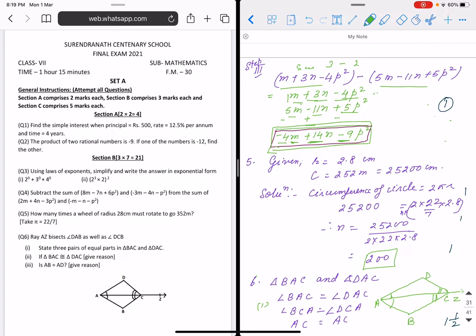Question 5: How many times a wheel of radius 28 cm must rotate to go 352 meter. We have to see that it is centimeter and it is meter. So meter is converted into centimeter, multiply with 100. Circumference of circle is 2 pi r. We put the value. How many times we don't know, we suppose it is n times. So n is 200 will be answer if you cancel.